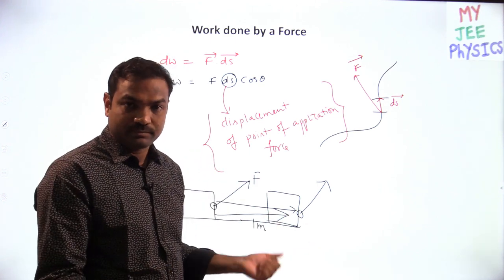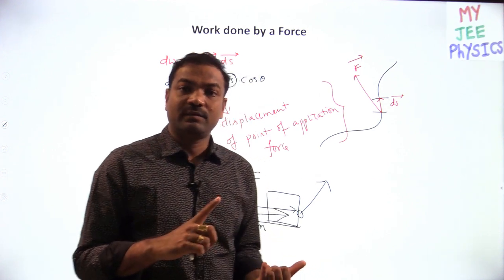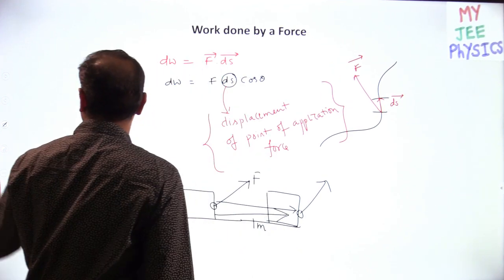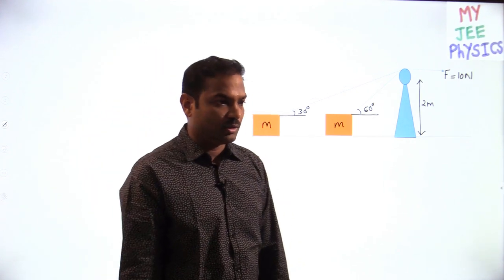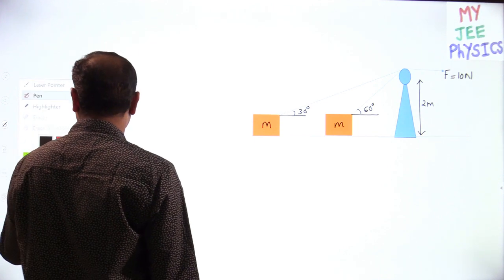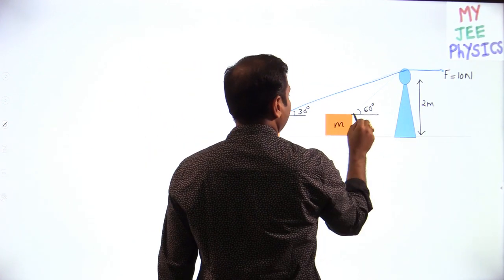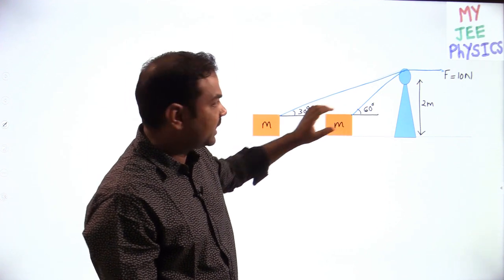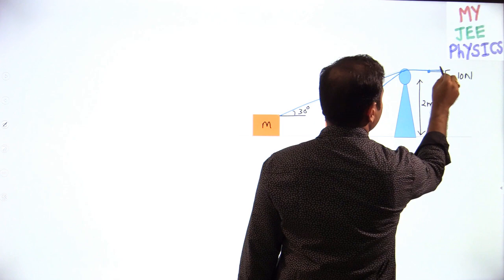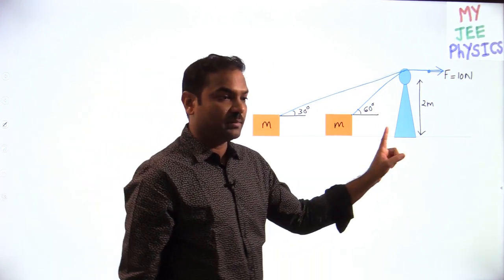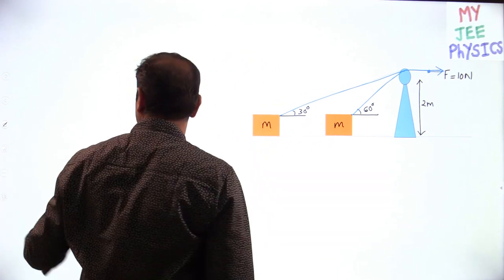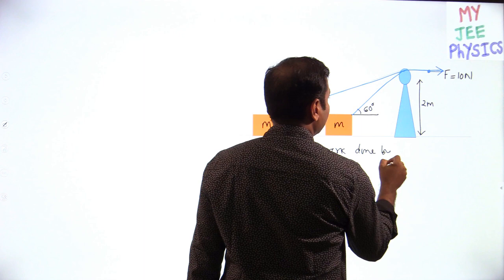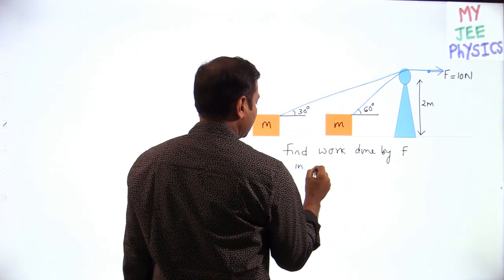But in some cases the displacement of the point of application of force will be different from displacement of the object — both will differ. Let us see that case. This is the string; we are pulling it. The height is 2 meters, initially block was here, now block is here. We are pulling with a force of 10 Newtons. The question is: what is the work done by the force in displacing the object from here to here?